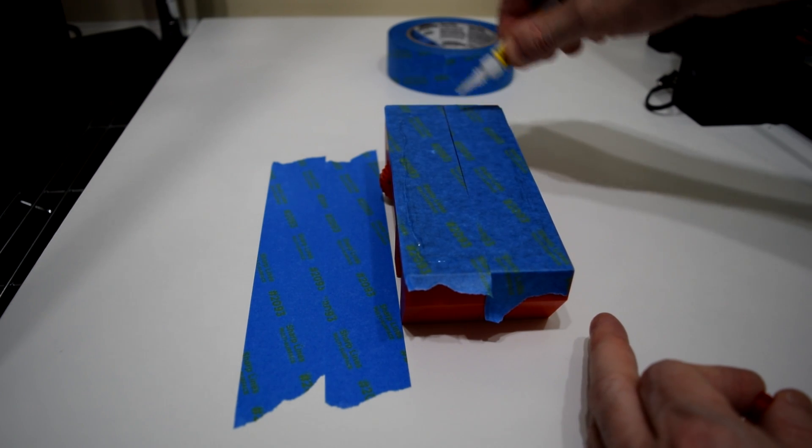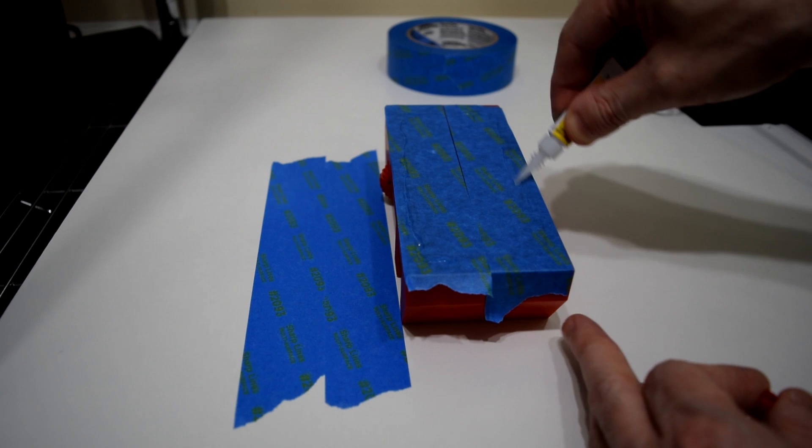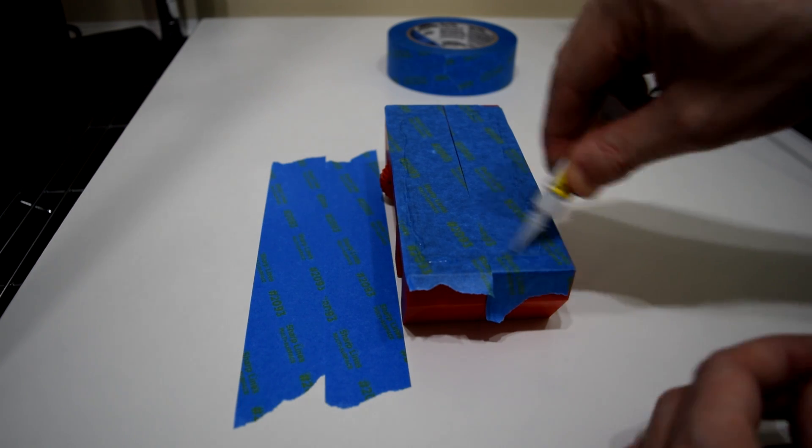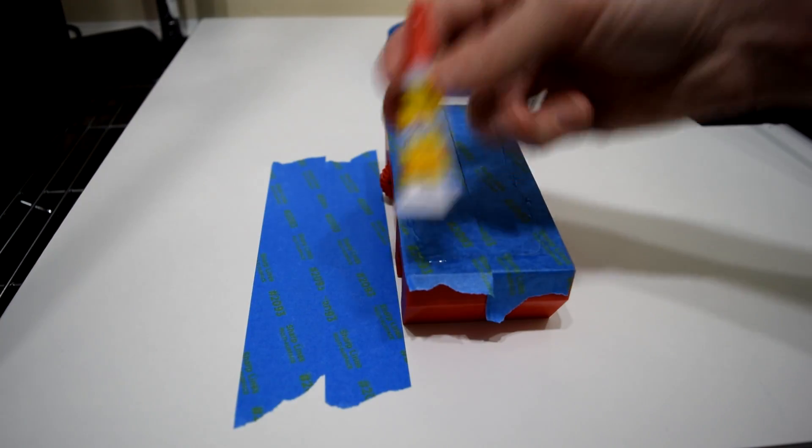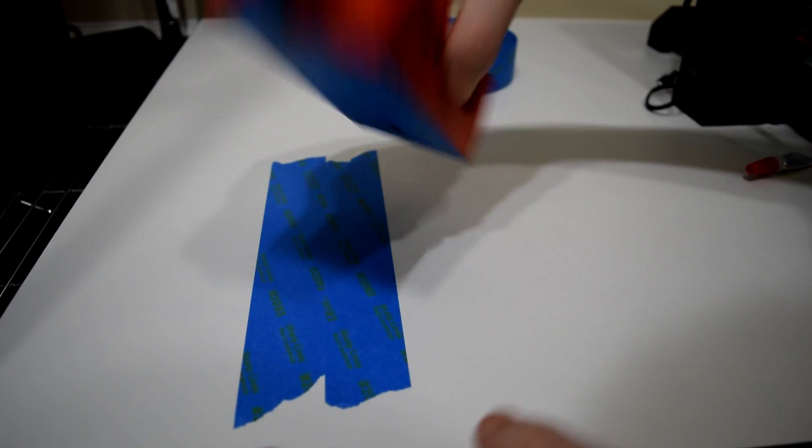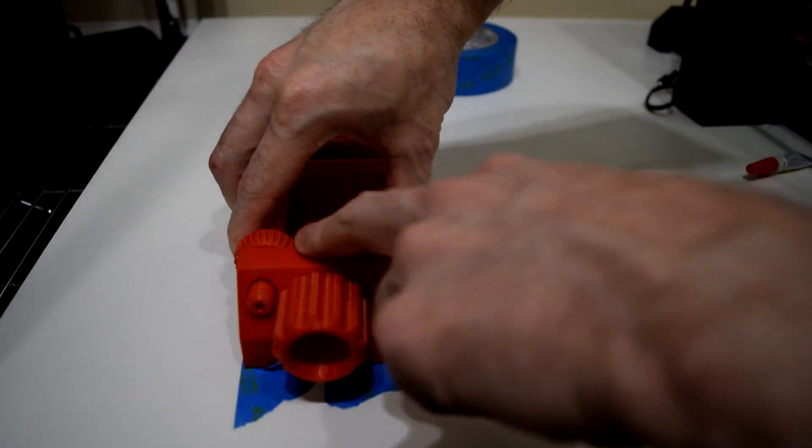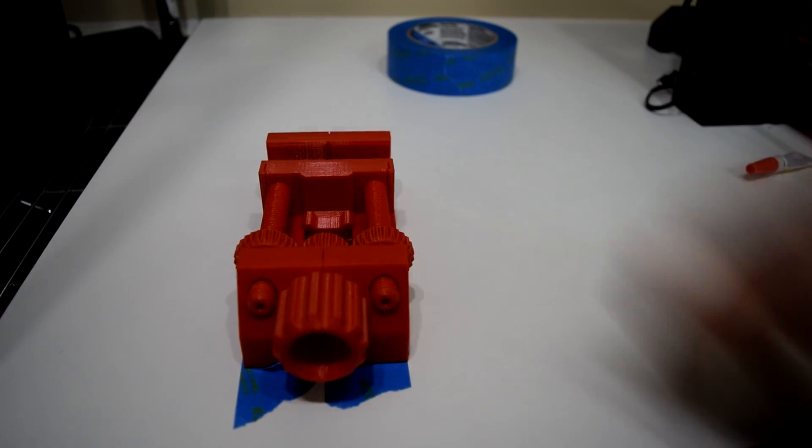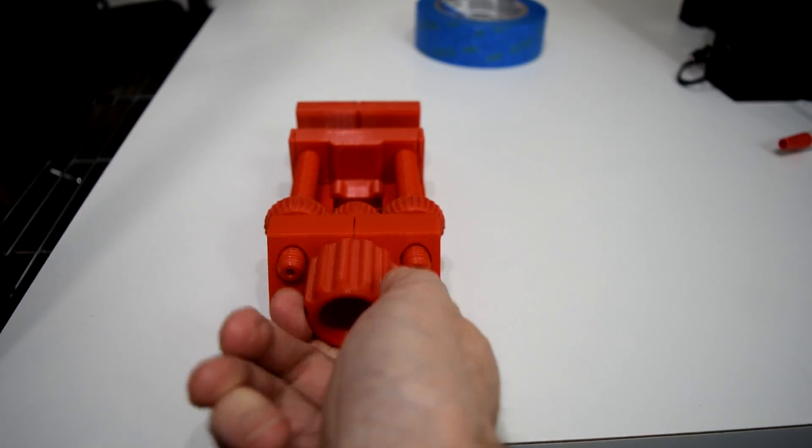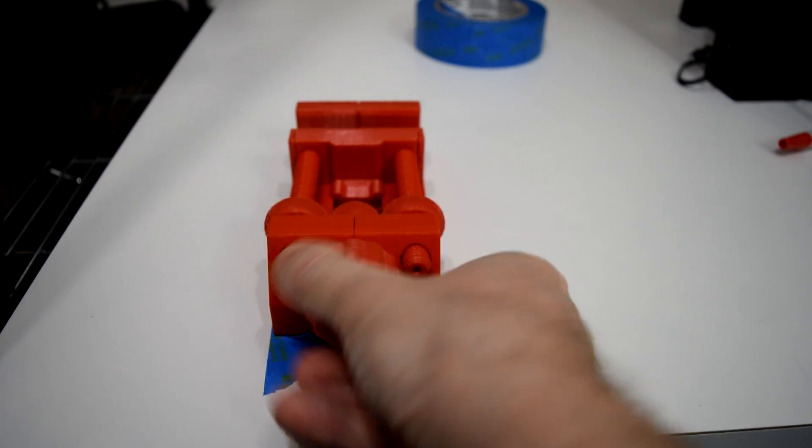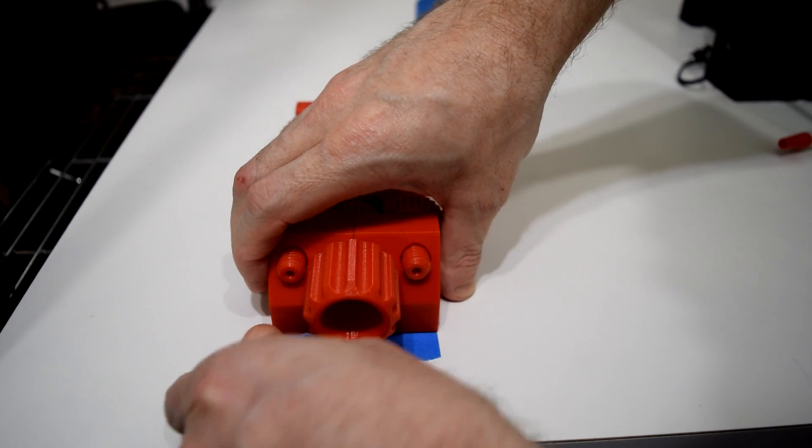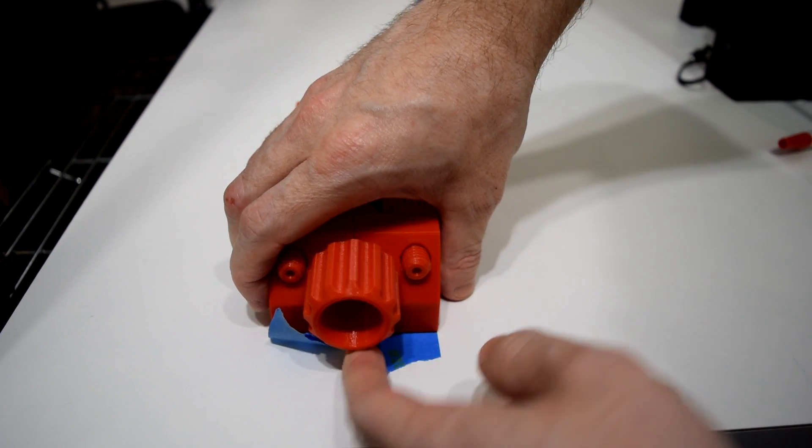After that, you superglue the two pieces of masking tape together, and now it's not going anywhere. You'd be amazed at how well this holds things in place, and it's very easy to clean up. Just pull up on the vise, peel the masking tape off, and you're good to go.